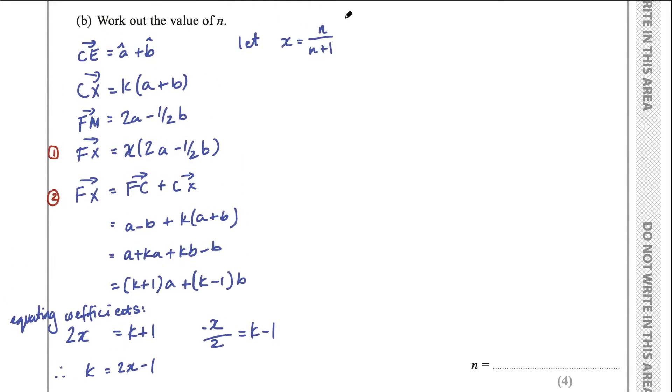So substitute it in here. We'd get negative X on 2 equals 2X take 1 take 1. Therefore, negative X on 2 equals 2X take 2. Therefore, negative X equals 4X take 4.